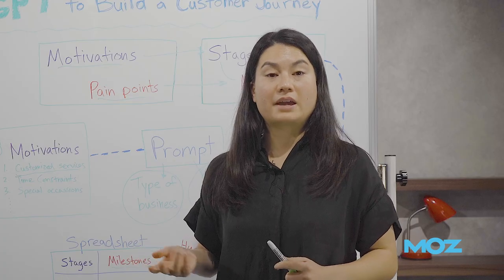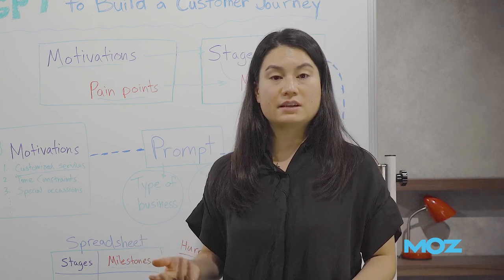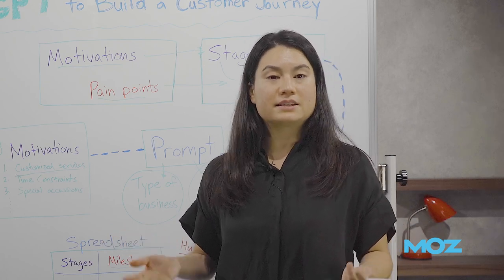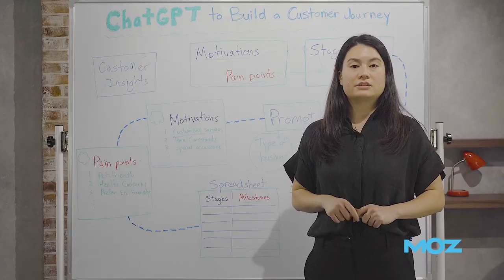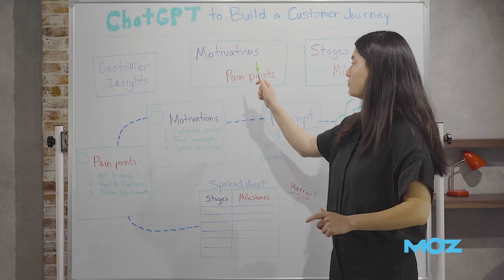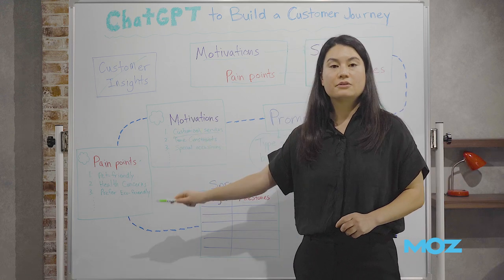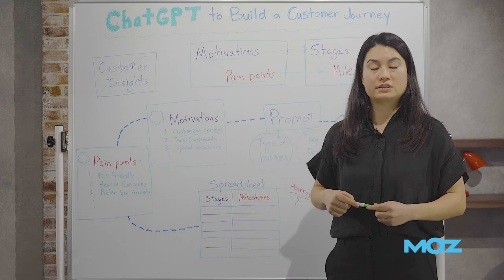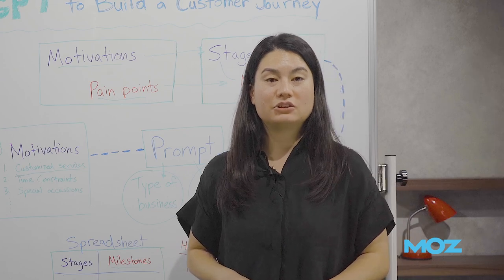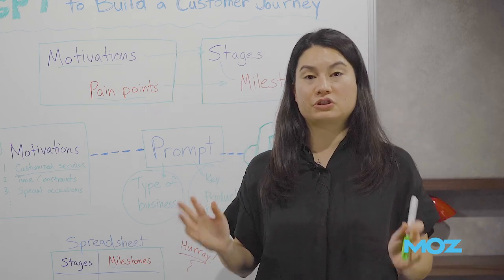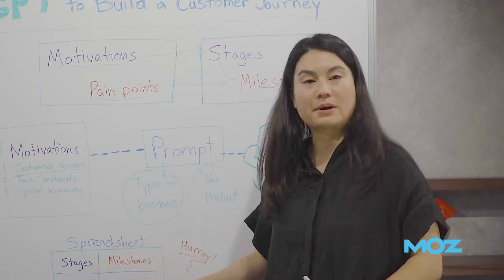Now we have one journey stage — customized services — and a list of milestones that sit under that stage. Next, you'll go back and repeat this whole process for all of your motivations and pain points. Once you've done that, you'll have a full user journey in a spreadsheet with stages and milestones.